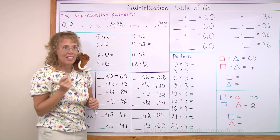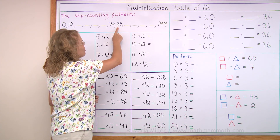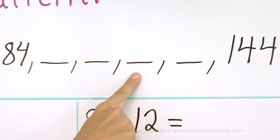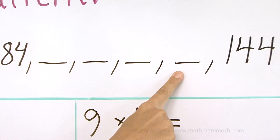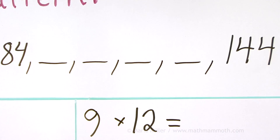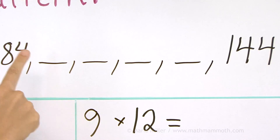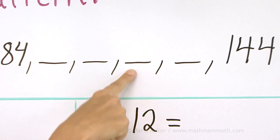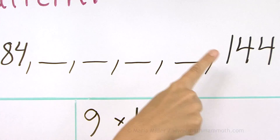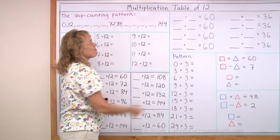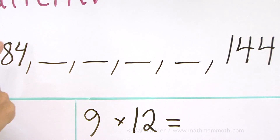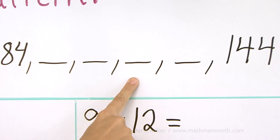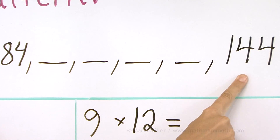And the latter half: 84, 96, 108, 120, 132, 144. Again: 84, 96, 108, 120, 132, 144. And your turn: 84 ... 144.